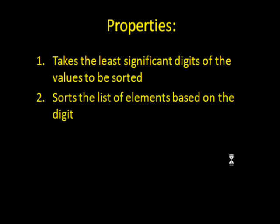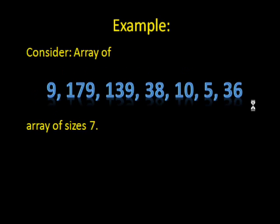How does radix sort work? Well, you first have to look at the least significant digit of each number, and then you sort them based on that alone. Once you've done that, then you sort them again based on the second most significant digit, and then the third, and so on. And it actually works surprisingly well — you'll see what we mean as we continue.